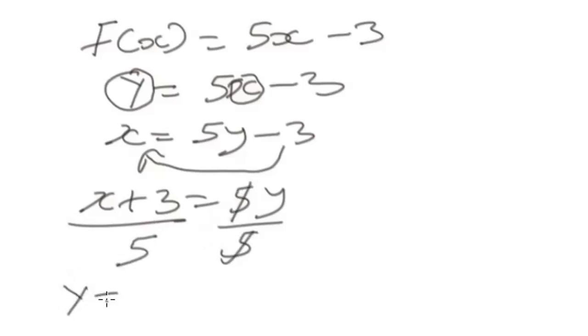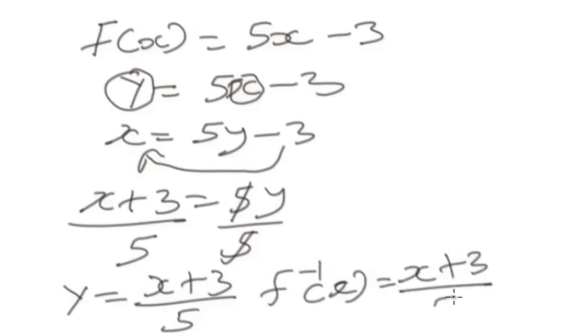...function y will be (x + 3)/5, or we write this as f^(-1)(x) = (x + 3)/5. So this will be the answer.